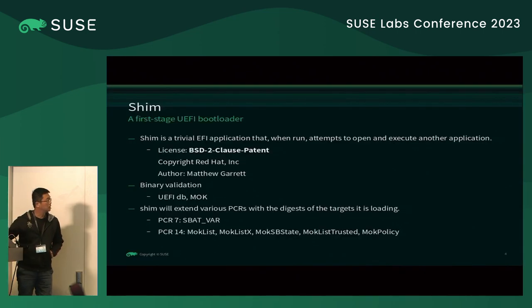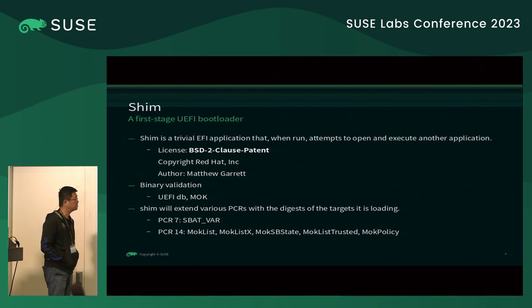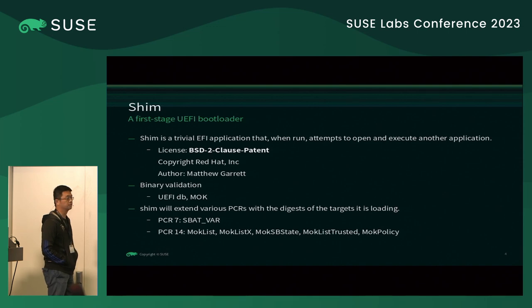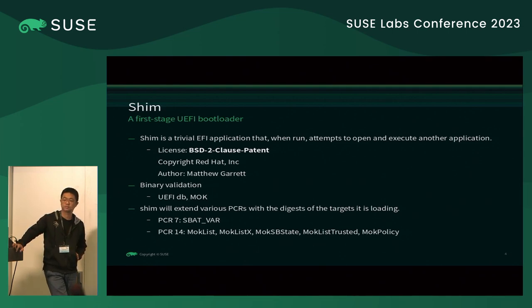The first is SHIM. Just in case anyone has not touched it before: SHIM is the first bootloader before GRUB2. It only works in the UEFI firmware environment — it is one EFI application. The key point is the license. The license is the BSD two-clause pattern. This is very important — actually the most important — because Microsoft does not want to sign anything under the GPL v3. That's why we cannot send GRUB2 to Microsoft's side, and that's why Mathew Garrett created this project and gave it a BSD license.